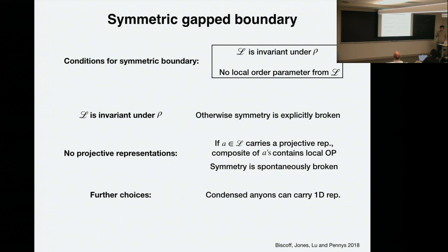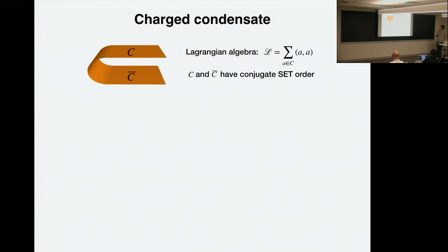When the invariance condition holds, you also have to make sure that there are no projective symmetry actions on the grains, the objects in L. A condensed anyon at the boundary should not carry any, say, spin-1/2 projective representation. If there is a projective rep — with H^2 coefficients — that would also need symmetry breaking. When these things don't happen, now you can have a gapped and symmetry-preserving boundary, or you can have a symmetric condensation out of the phase. But then you can still make choices — you can make the anyons carry one-dimensional representations under the symmetry.